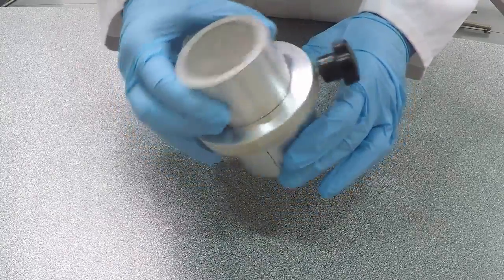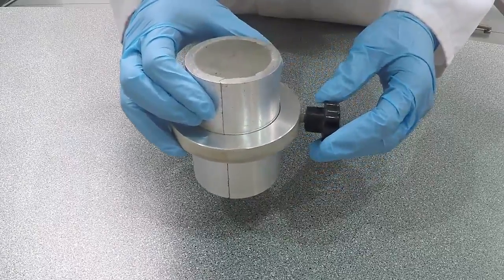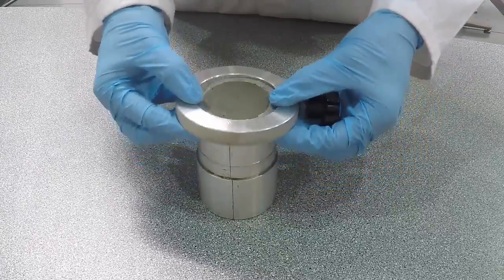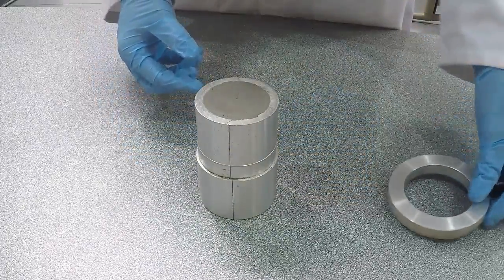Start by preparing your specimen in accordance with your test standard. Once you have trimmed your sample to size, you will need to remove the split mould.